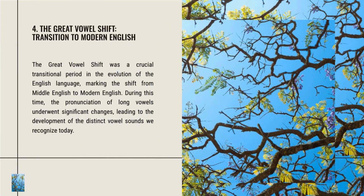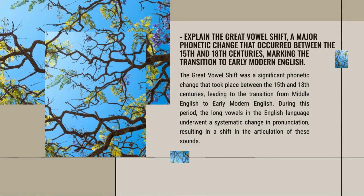The Great Vowel Shift was a crucial transitional period in the evolution of the English language, marking the shift from Middle English to Modern English. Taking place between the 15th and 18th centuries, the pronunciation of long vowels underwent a systematic change, leading to the development of the distinct vowel sounds we recognize today.